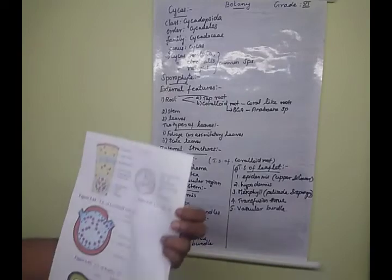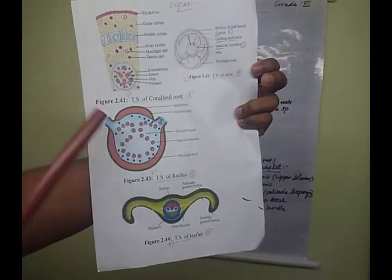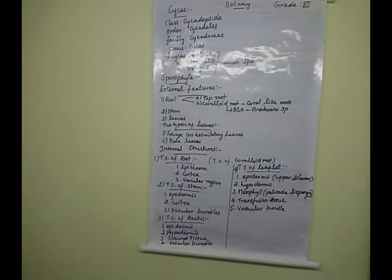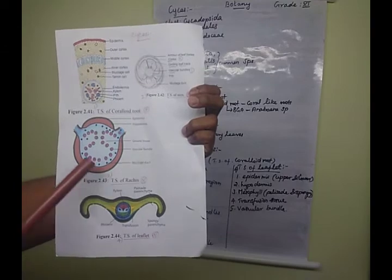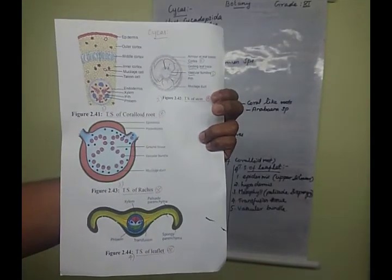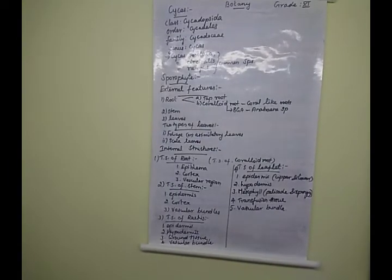The next region is the ground tissue. Except for the omega-shaped vascular bundle region, everything else is called ground tissue. The ground tissue cells are parenchymatous cells. A special unique character of the rachis is that the vascular bundles are arranged in an omega shape inside the ground tissue.